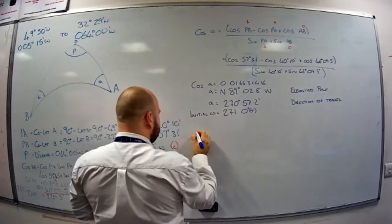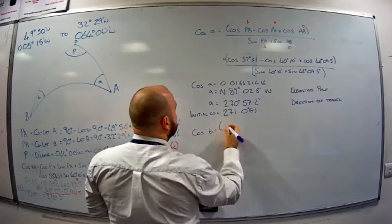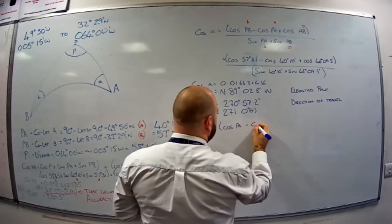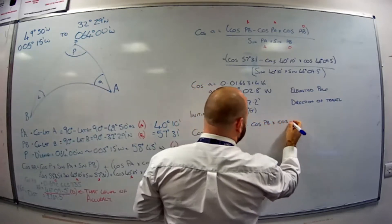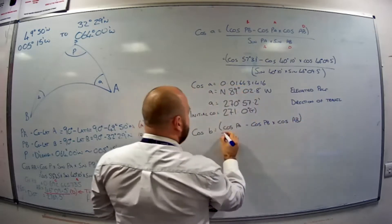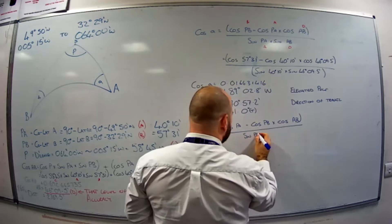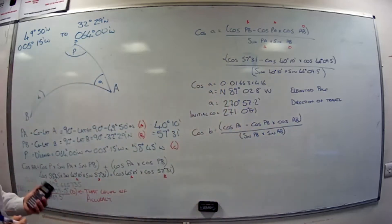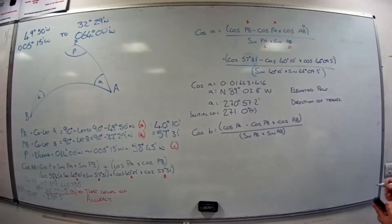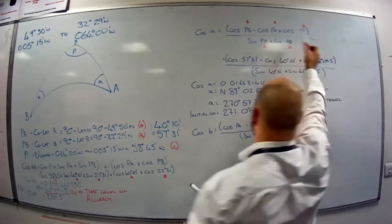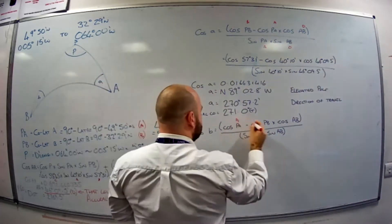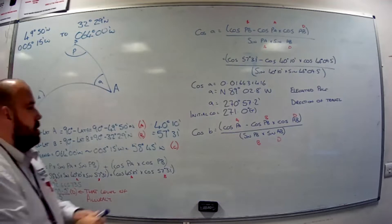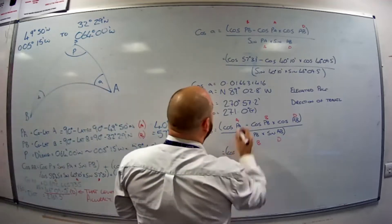Final course follows the same idea. Cos little B equals — all it does in the formula is swap the B for the A — so it becomes: cos PA minus cos PB times cos AB, divided by sin PB times sin AB. We've just swapped the PA's and PB's over. That formula is also given on your formula sheet. In terms of the calculator memory, this time instead of cos BAD divided by sin AD, we've got the A and B positions swapped. We populate the numbers: cos PA was 40°10'.